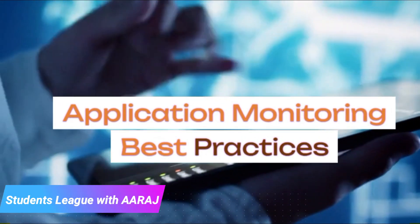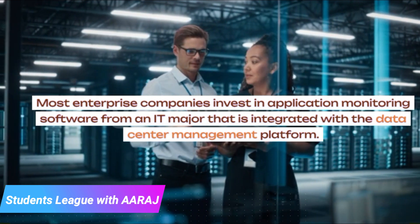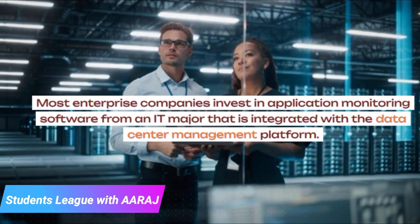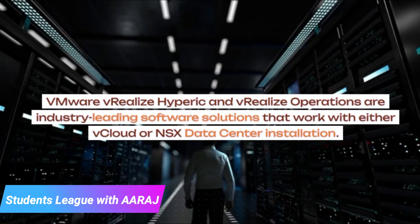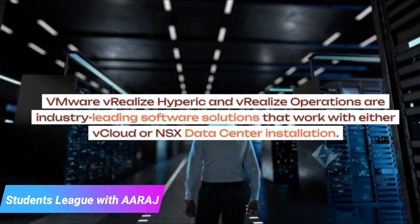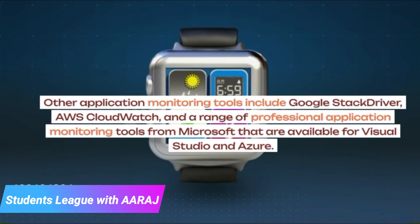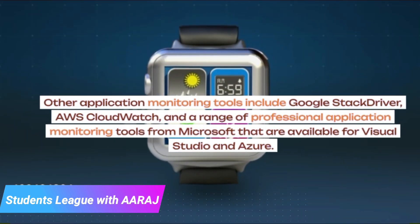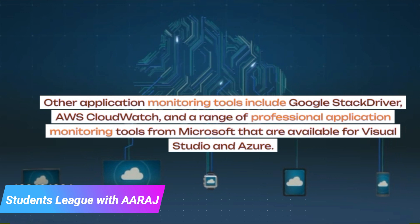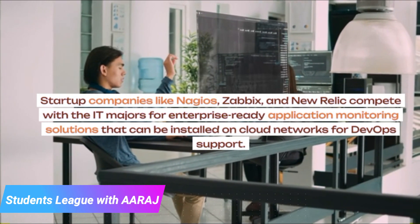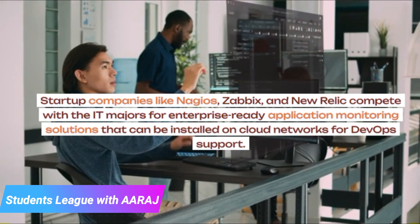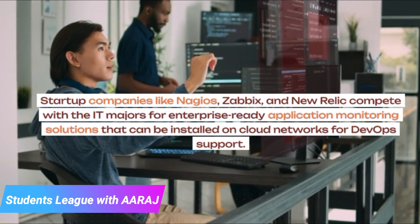Most enterprise companies invest in application monitoring software from an IT major that is integrated with the data center management platform. VMware vRealize Hyperic and vRealize Operations are industry-leading software solutions that work with either vCloud or NSX data center installations. Other application monitoring tools include Google Stackdriver, AWS CloudWatch, and a range of professional tools from Microsoft available for Visual Studio and Azure. Startup companies like Nagios, Zabbix, and New Relic compete with the IT majors for enterprise-ready application monitoring solutions that can be installed on cloud networks for DevOps support.